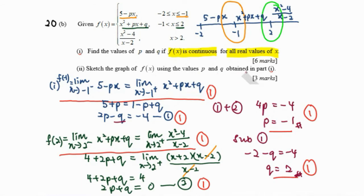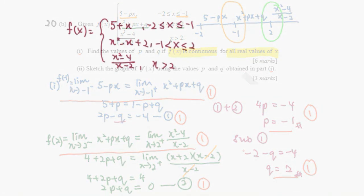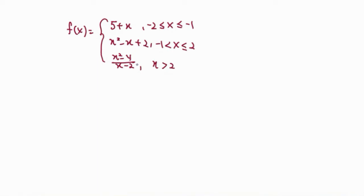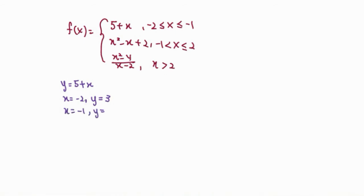Now for part 2, we sketch the graph using the values of p and q from part 1. For the first piece, the function is 5 plus x. The starting point is at x equals negative 2, giving coordinate y equals 3, and the ending point is at x equals negative 1, giving y equals 4. This is a linear graph.